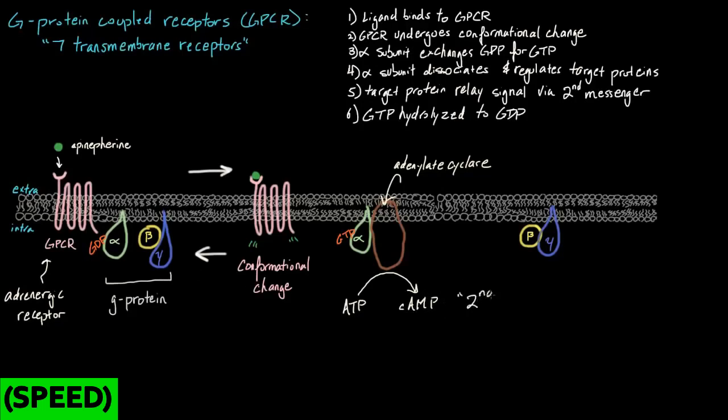Once this happens, our cyclic AMP here is what we call a second messenger. So our signal, our epinephrine, goes through this entire process, and the signal is transformed into another signal, the cyclic AMP, which is now inside our cells.